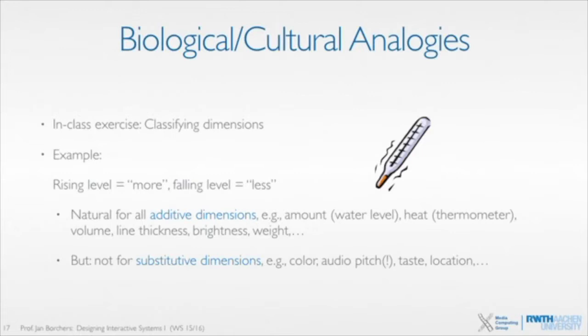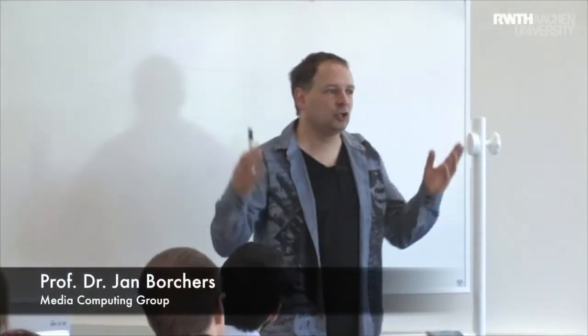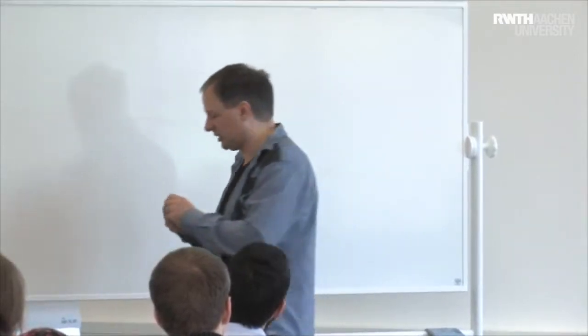I mentioned that there's a third kind of analogy, biological or cultural ones. And for this, I would like to do a little exercise, which comes back to the question the gentleman with the cool hair had, who also moved somewhere else or isn't here right now. Anyway, this was about how can we classify some dimensions. So let's think about physical dimensions, very general, that we could control with the user interface. What kind of physical dimensions can you guys think of? You can just shout out a couple and I'll write them down.